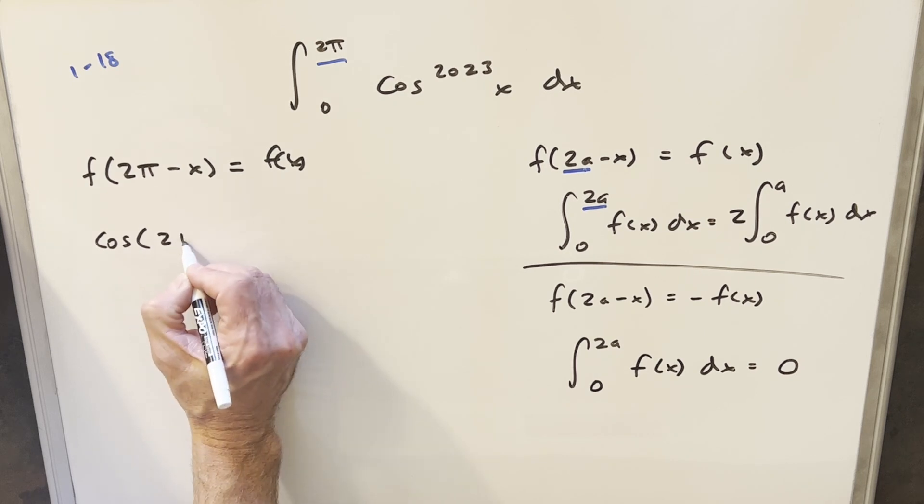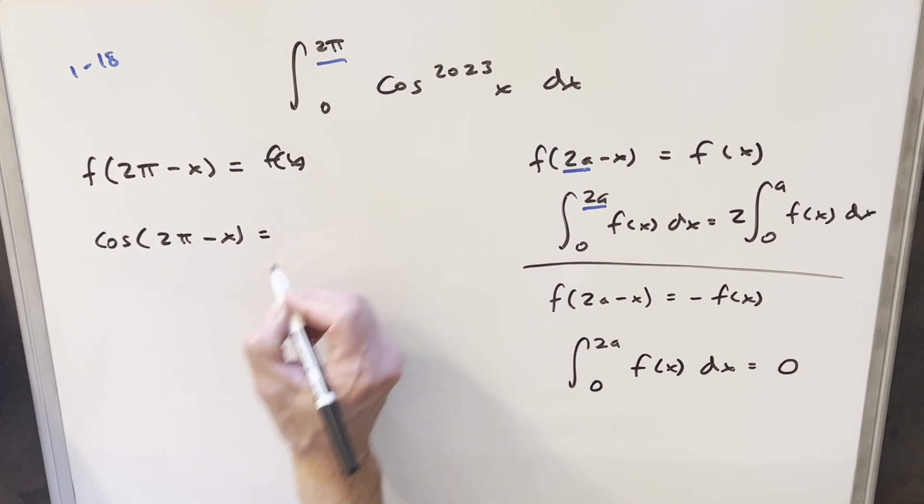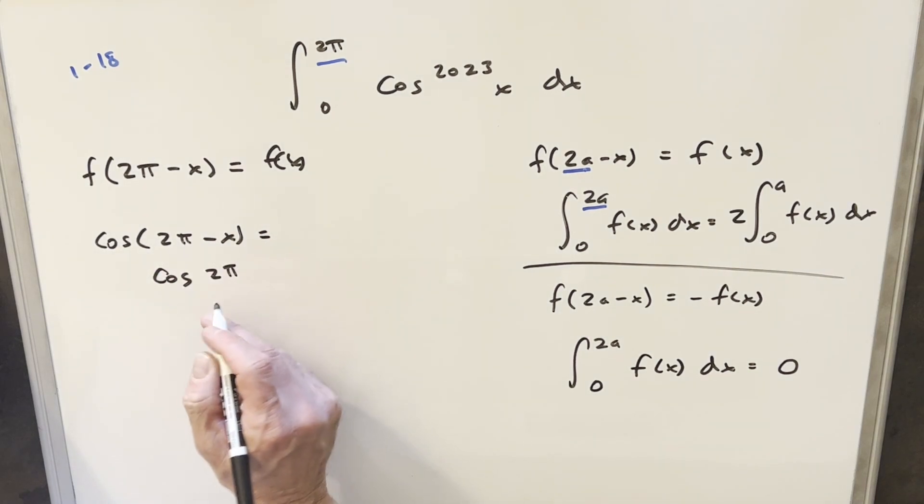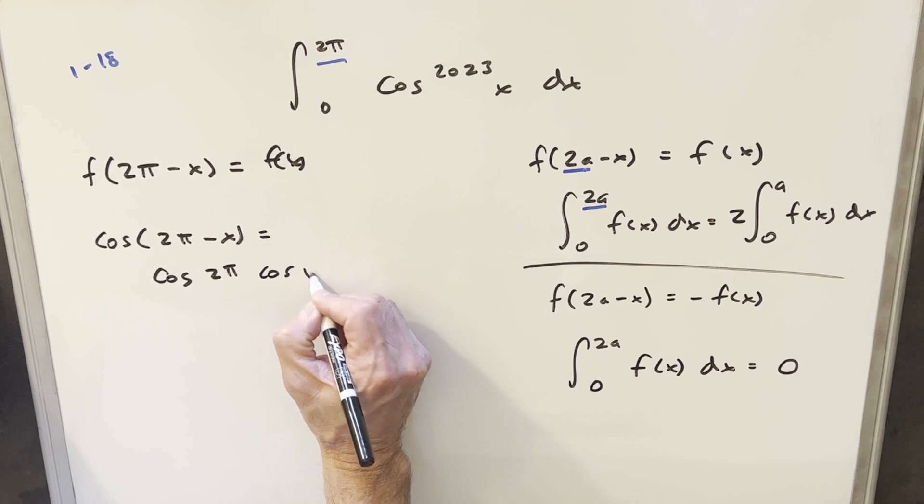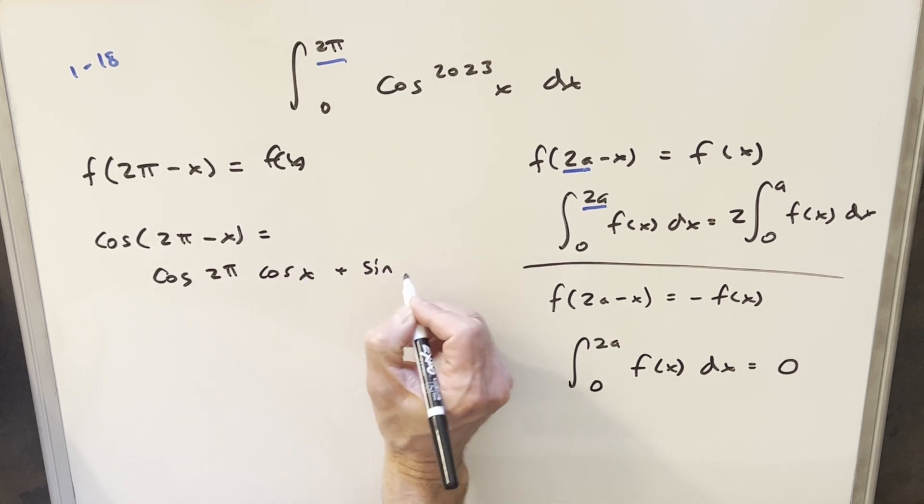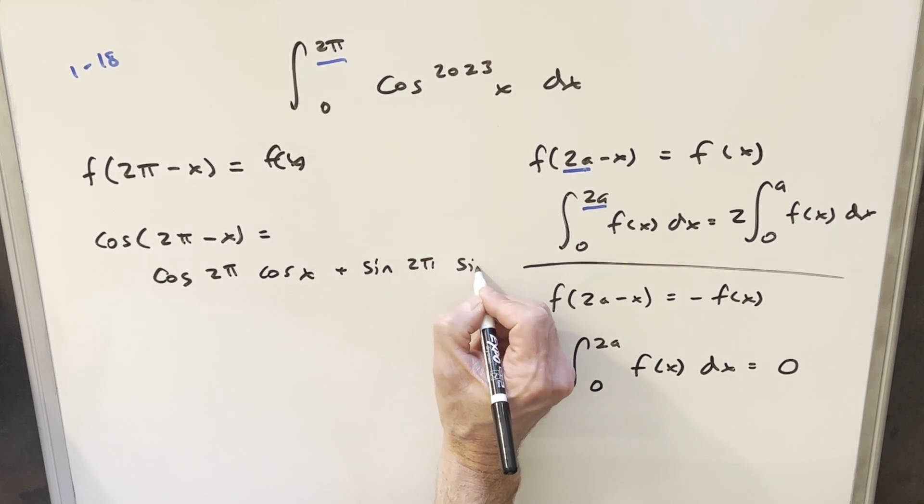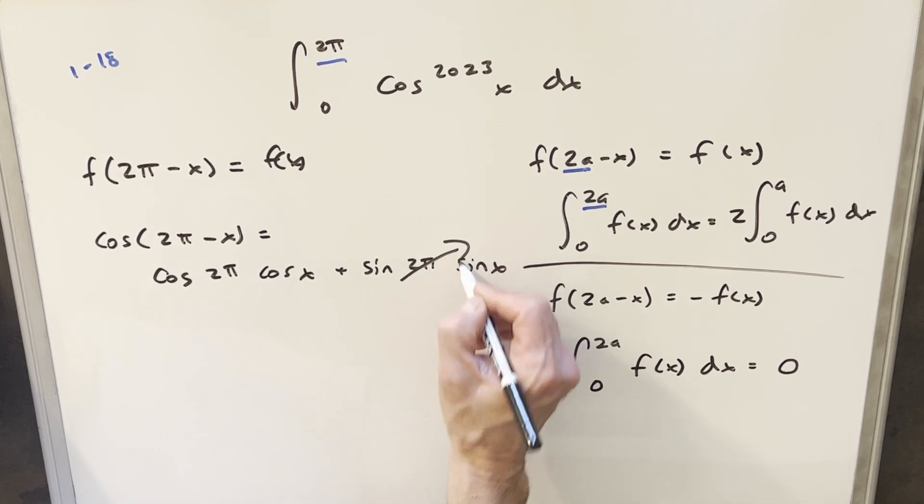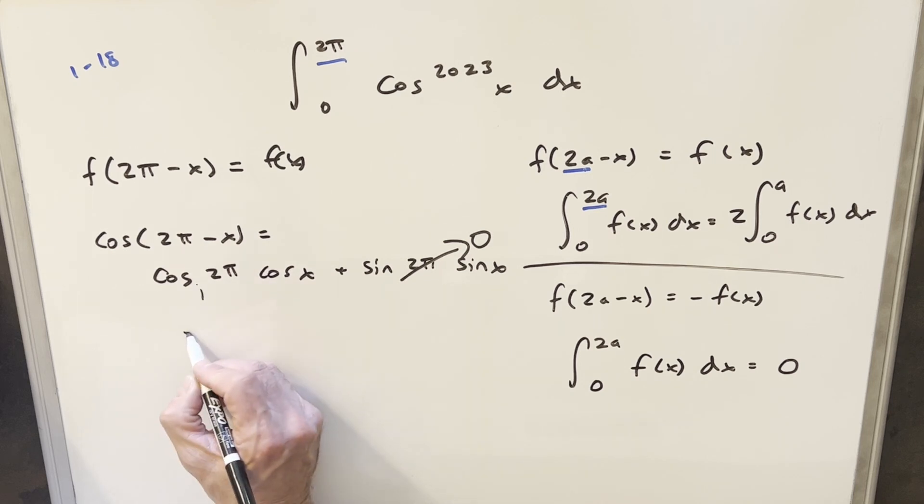What I can do on this real quick is just the angle addition formula, so we can see it really clear. We're going to end up with cosine 2π cosine of x plus sine of 2π sine of x. This piece goes to zero, but sine of 2π is zero. Cosine of 2π is just one, and we end up with cosine of x.